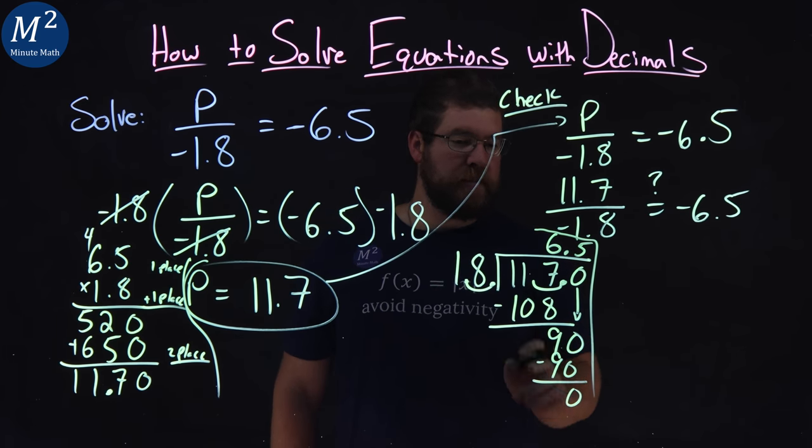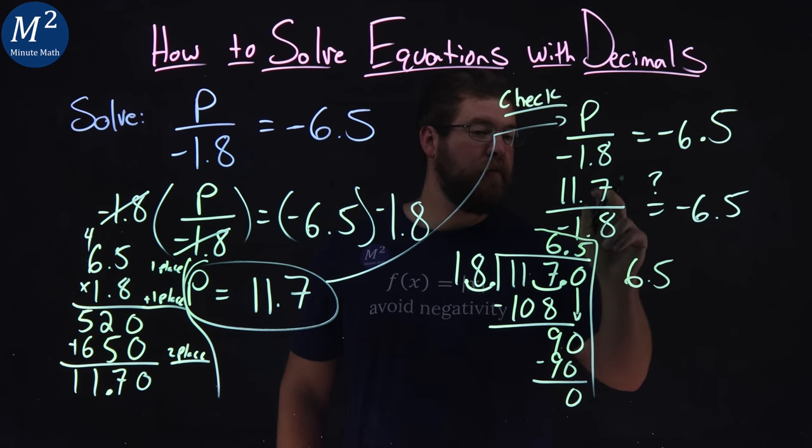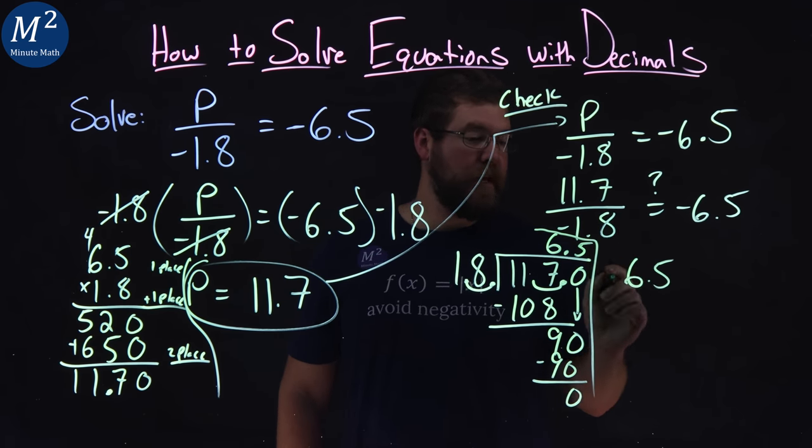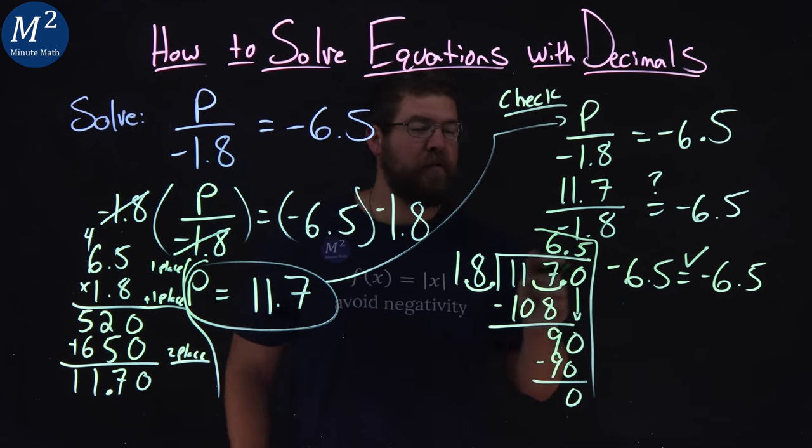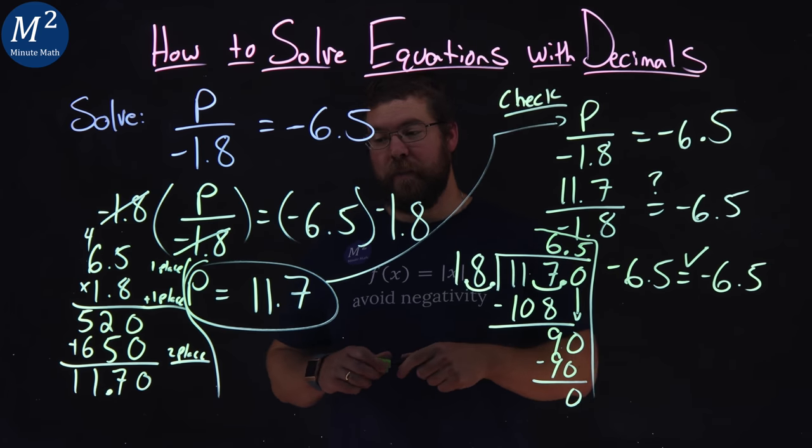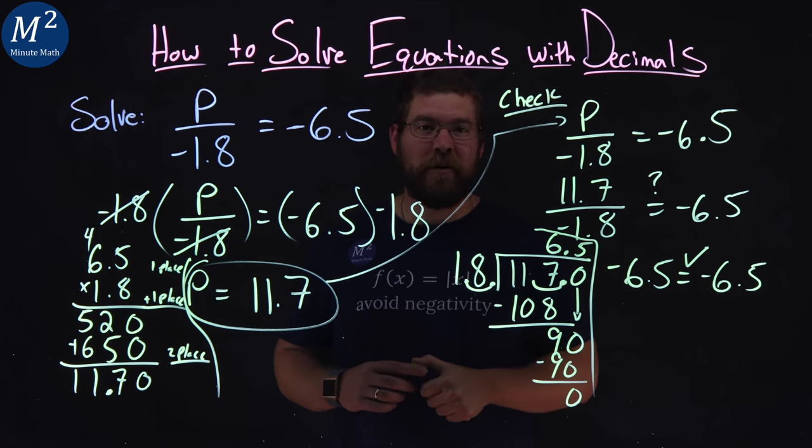Let me separate that here. So the left-hand side is 6.5. But it had to be negative. Positive divided by a negative is a negative. And that is equal to negative 6.5. We're good. Our left and right-hand side are equal. Confirming that p equals 11.7 is a solution to our equation.